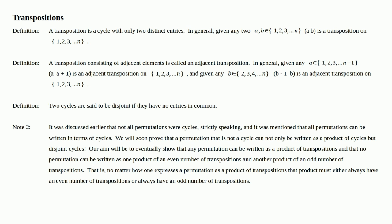Our aim will be to eventually show that any permutation can be written as a product of transpositions, and that no permutation can be written as one product of an even number of transpositions and another product of an odd number of transpositions. That is, no matter how one expresses a permutation as a product of transpositions, that product must either always have an even number of transpositions or always have an odd number of transpositions. And that's a big deal.